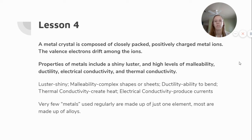And then lesson four. We had two key questions here. A metal crystal is composed of closely packed, positively charged metal ions. The valence electrons drift among the ions. Properties of metals include a shiny luster and high levels of malleability, ductility, electrical conductivity, and thermal conductivity. So remember five properties of metals.